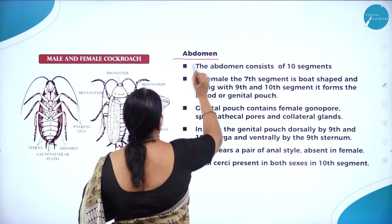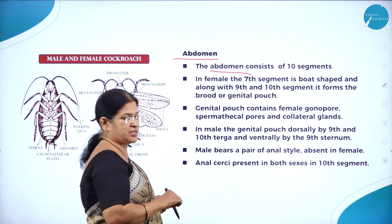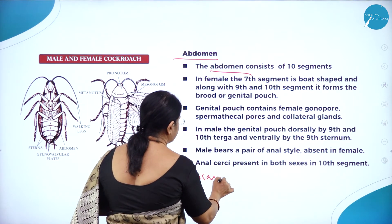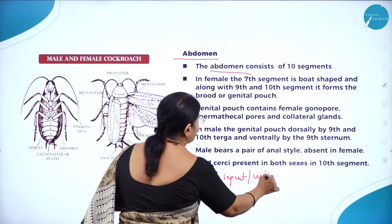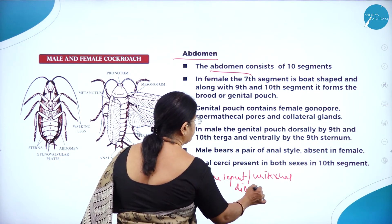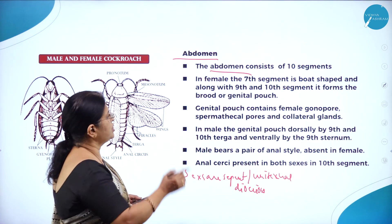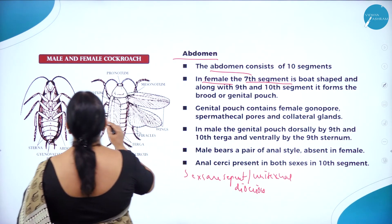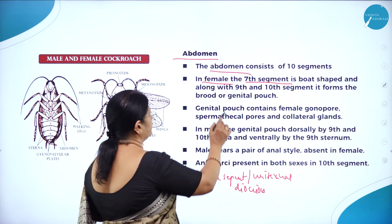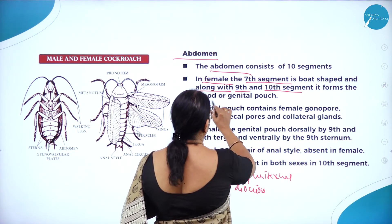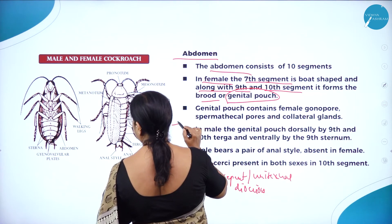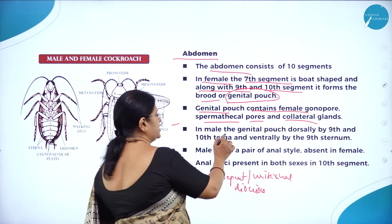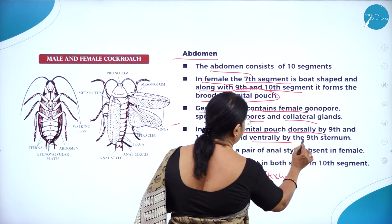Moving on to the abdomen: the abdomen consists of 10 segments. The sexes are separate — cockroaches are unisexual or dioecious animals. In the female, the seventh segment is boat-shaped and along with the ninth and tenth segments forms the brood or genital pouch. The genital pouch contains the female gonopore, spermathecal pores, and collateral glands. In males, the genital pouch is formed dorsally by the ninth and tenth terga and ventrally by the ninth sternum.